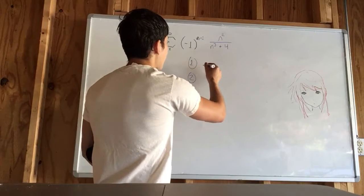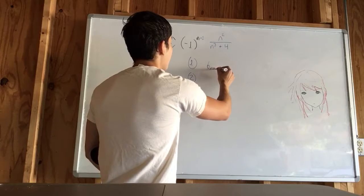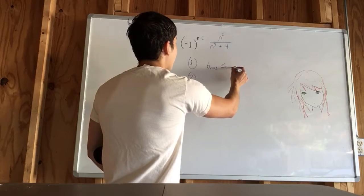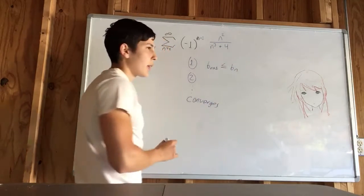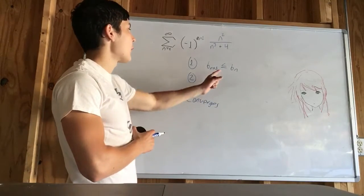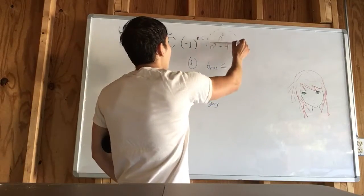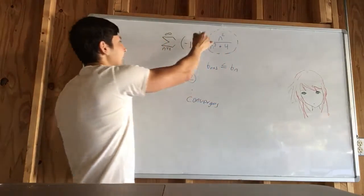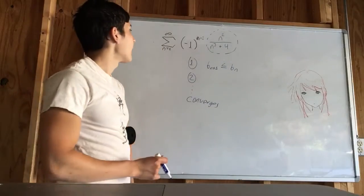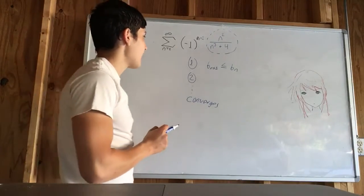So what are these two tests? The first one is that b sub n plus 1 has to be less than or equal to b sub n. So in other words, it's monotonically decreasing. So what is b sub n? b sub n is just the part here which doesn't contain the alternating little part. So that's what b sub n is.